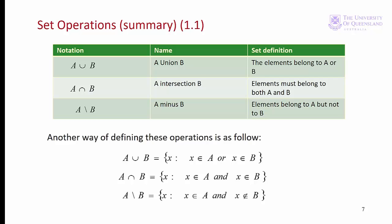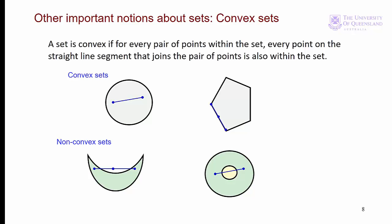Here we have a summary of some of the notation we've discussed. Finally, just for completion, let's consider convex and non-convex sets. We can represent these concepts best diagrammatically. If we have a set and take a pair of points within the set — say A and B — and join them by a line segment, then if every point on that line segment lies within the set, we have a convex set. If some points on the line segment lie outside the set, like here or here, then we have non-convex sets.